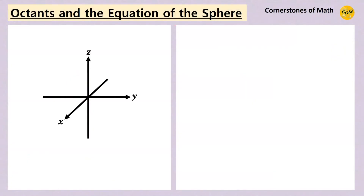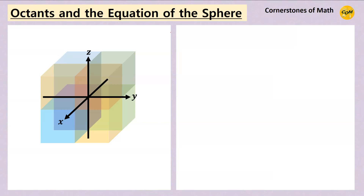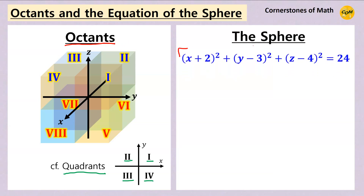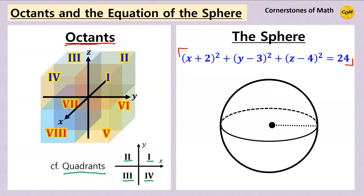Before we do anything, we need to name some things and understand the basic setting of the problem. We are dealing with these eight regions in a coordinate space. Just like we call four regions in a two-dimensional space quadrants, these eight regions are often called octants. Let us name these octants 1 through 8. The given sphere has center minus 2, 3, 4 and radius square root of 24.